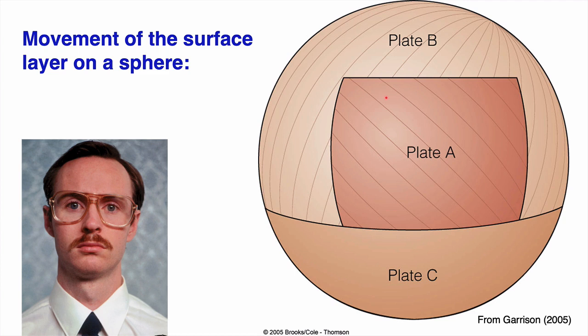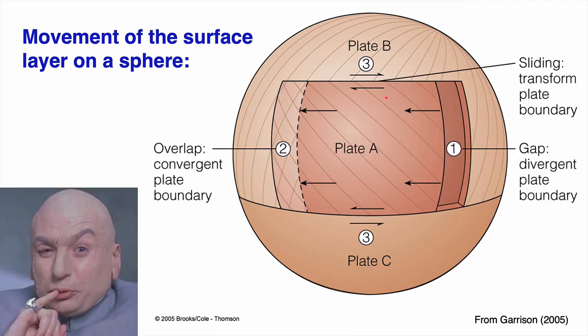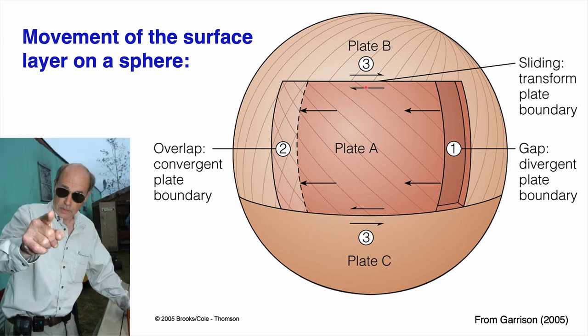This cartoon shows a spherical earth with three plates — A, B, and C. When we move plate A, you get weird shapes occurring as you separate and overlap the plates. If we flatten this onto a map view, you'd get a trapezoidal shape from these overlaps and cuts. This shows the sliding-past-each-other motion — in basic plate tectonics that's called a transform boundary, a transform fault.